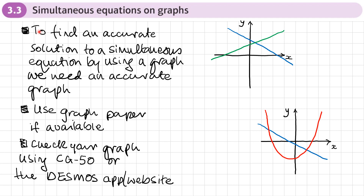In this section we're going to be finding the solution to simultaneous equations by using the graph of the equation. To find an accurate solution we need an accurate graph, so this isn't going to be a sketch — we want to plot values and draw the graph as accurately as we can. Use graph paper if available, or at a minimum centimeter or half-centimeter squared paper.